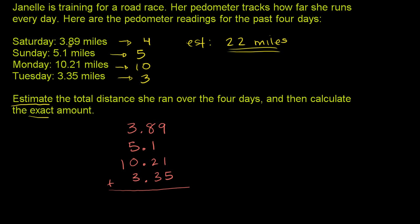Starting in the hundredths place: 9 plus nothing plus 1 plus 5 is 15. Write the 5 and carry the 1. Then in the tenths place: 1 plus 8 is 9, plus 1 is 10, plus 2 is 12, plus 3 is 15. Put the 5 down and carry the 1.